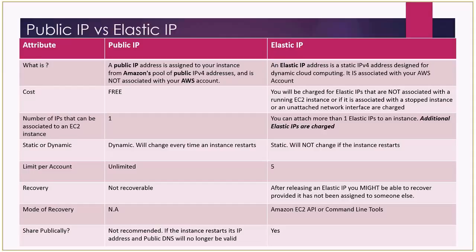The limit per account for public IP addresses is effectively unlimited — as many EC2 instances as you can launch, for example up to 20 on-demand by default, though you can request an increase. There is no upper cap that restricts AWS from giving you a public IP address as long as you can launch an EC2 instance. For elastic IP addresses, the limit is five per account.